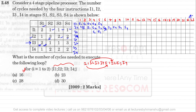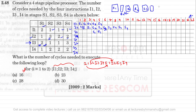After I3 finishes S1, stage S2 is not available because I2 is still executing in S2. Recall the pipeline diagram: each stage has a buffer register between stages. I3 finishes S1 but must sit in the buffer. Stage S2 is available only at the seventh clock cycle, so I3 enters S2 at clock cycle 7.